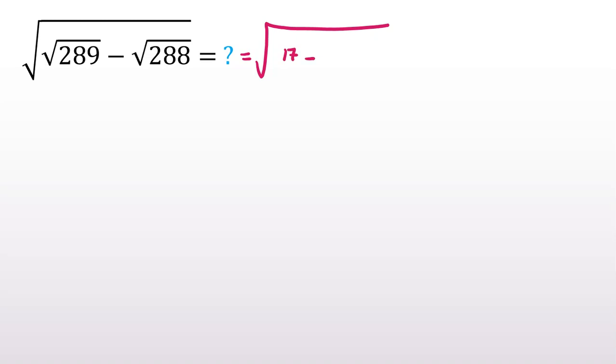17 minus, if we factor, 288 is 4 times 72. Okay, so you can write it as 2 times square root of 72. And we can say 72 is 8 times 9. Why we write like this?